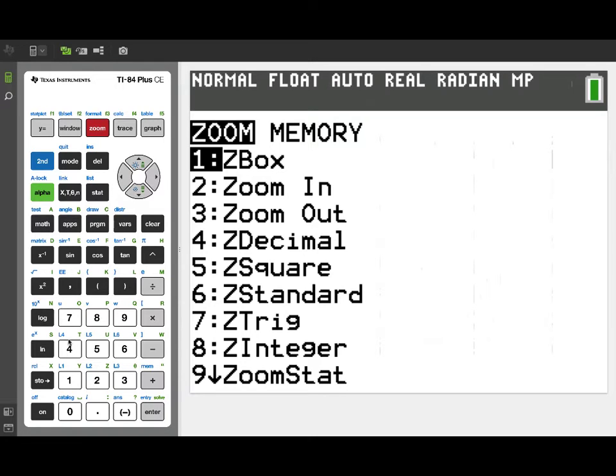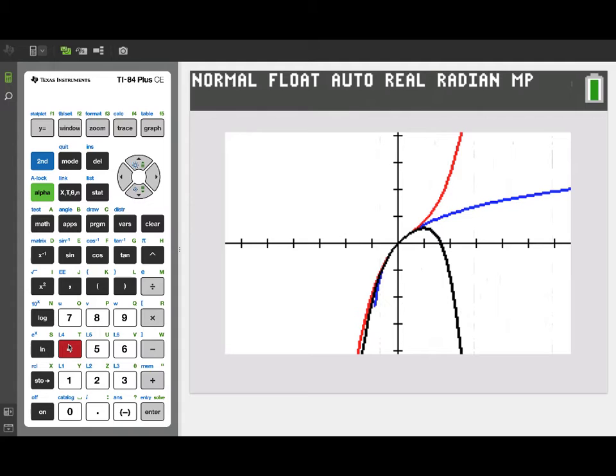Let's graph these in a zoom decimal window and see what we get. Alright, there's three graphs. Can we tell them apart? Well, we might want to do a trace. The blue graph is our original function, natural log of 1 plus x. I'm tracing to the left all the way over to x equals negative 1, and notice that the function's undefined there at negative 1. That's because we would be taking the natural log of 0, which is undefined.